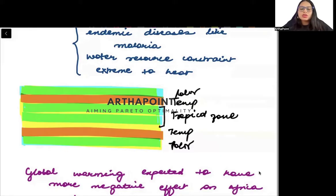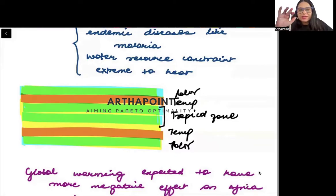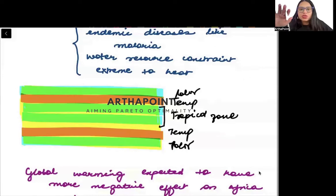The tropical zone is that zone of the Earth which is basically defined using the Tropic of Cancer. Then you have the temperate zone, and then the polar zone.